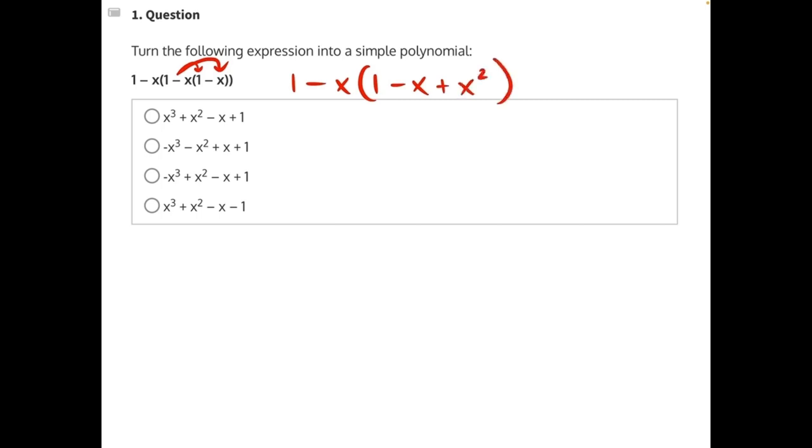Now we can distribute the next negative x into this set of parentheses. Negative x times 1 would be a negative x. Negative x times negative x would be positive x squared. And negative x times positive x squared would be a negative x cubed.